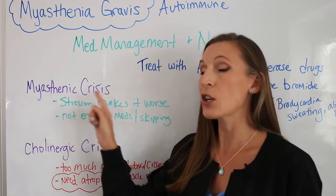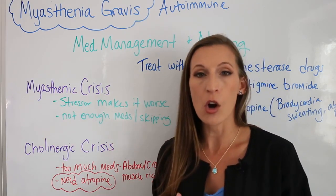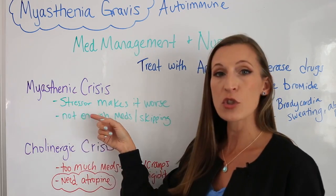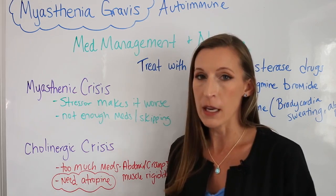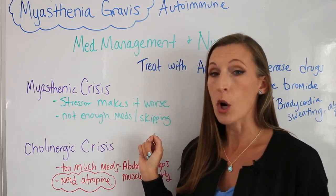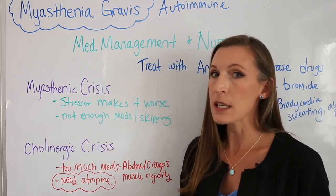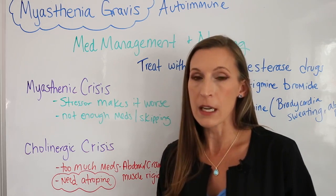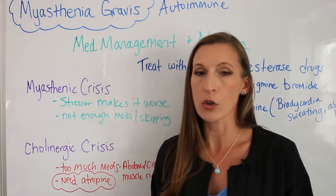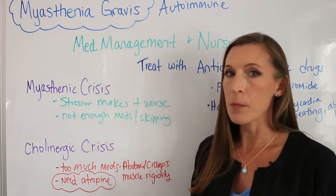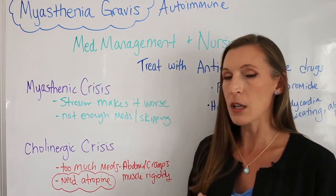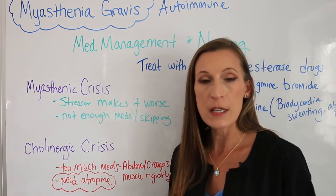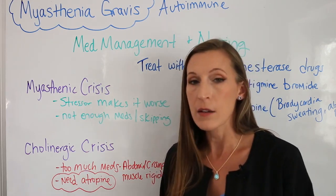Other causes of myasthenic crisis include infections — when someone has an autoimmune disease, infections make it worse — or high levels of stress, which can worsen symptoms. The second type is the cholinergic crisis, which is the opposite: an overdose of medication. They're taking too much, creating an overload of acetylcholine, producing side effects like abdominal cramps, muscle rigidity, and bradycardia. They need atropine, the antidote, to correct what happened.